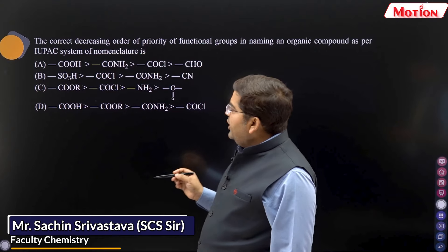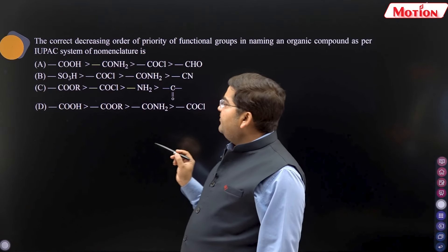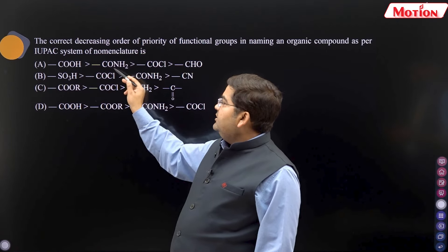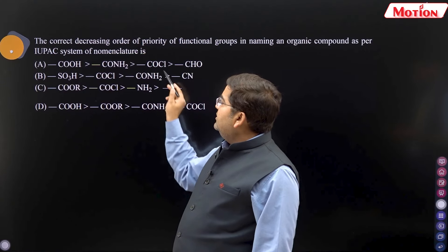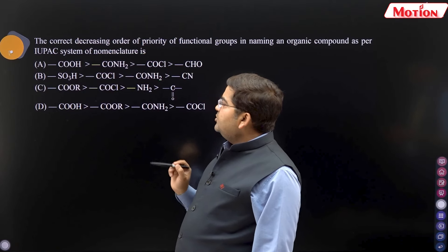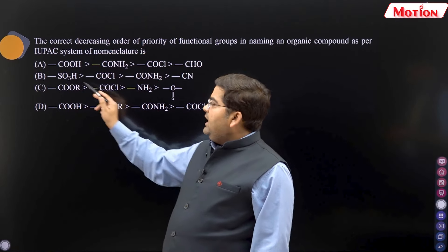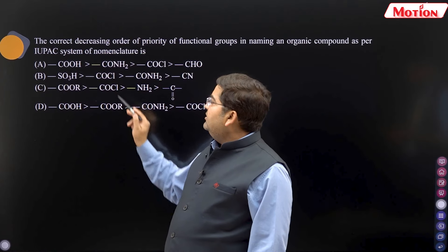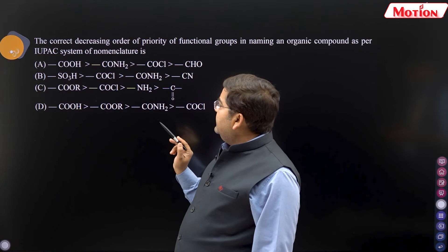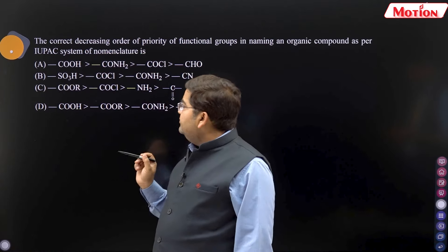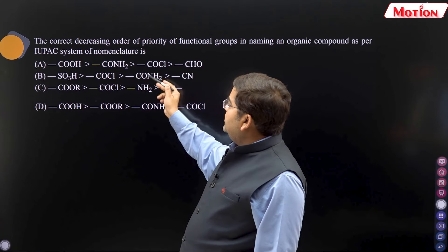First of all, the priority list is COOH. The correct thing is CONH2? No. CONH2 is in COCL. COCL is first. So this option is wrong. SO3H is second number. COCL is right. CONH2. COCL plus a CONH2.